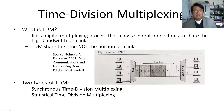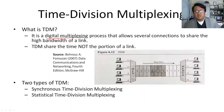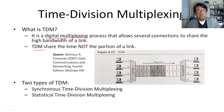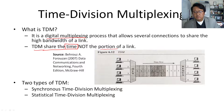Now coming to Time Division Multiplexing. This is slightly different from FDM and WDM, because those two deal with multiplexing of analog signals, whereas TDM deals with multiplexing of digital signals. TDM allows several connections to share the high bandwidth of a link. The main difference is that in TDM we are sharing time — not a portion of the link, but the full capacity of the link — sharing the time of the transmission.